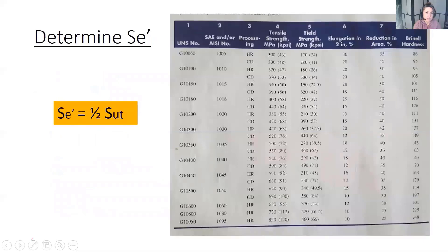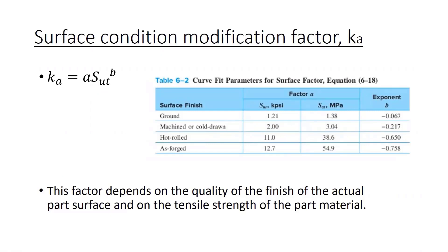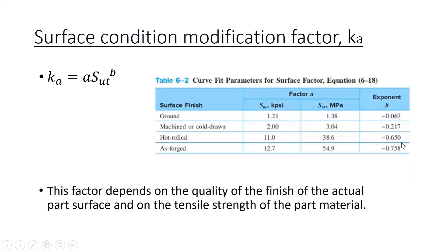The first step is determining SE prime, which is simply one-half of S_ut. KA is the surface condition modification factor, depending on the quality of finish — ranging from ground to machined or cold-drawn, to hot-rolled, to as-forged — and on the tensile strength of the part material. Make sure you use this table as it appears in the 11th edition of Shigley, where the values have been updated from older experiments. The factor A and exponent B from the 11th edition are what you need in your analysis tool.